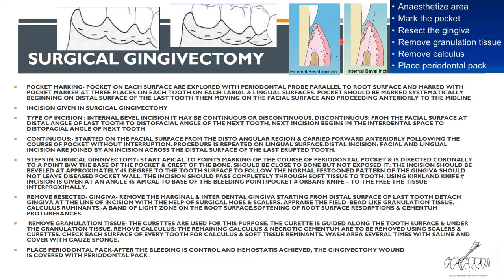The internal bevel incision may be continuous or discontinuous. In the discontinuous type, the incision starts on the facial surface at the distal angle of the last tooth and goes to the distrofacial angle of the next tooth; the next incision begins in the interdental space. In the continuous type, the incision starts on the facial surface from the distroangular region and is carried forward anteriorly without breaking, with facial and lingual incisions joined across the distal surface of the last erupted tooth.